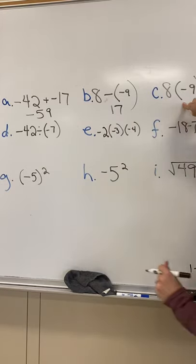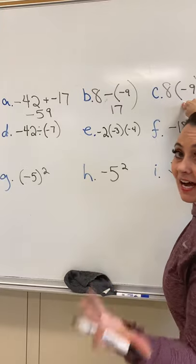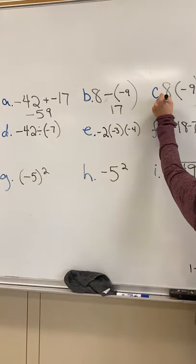And then C, 8 with the parentheses negative 9. That's like saying 8 times negative 9, which is negative 72.